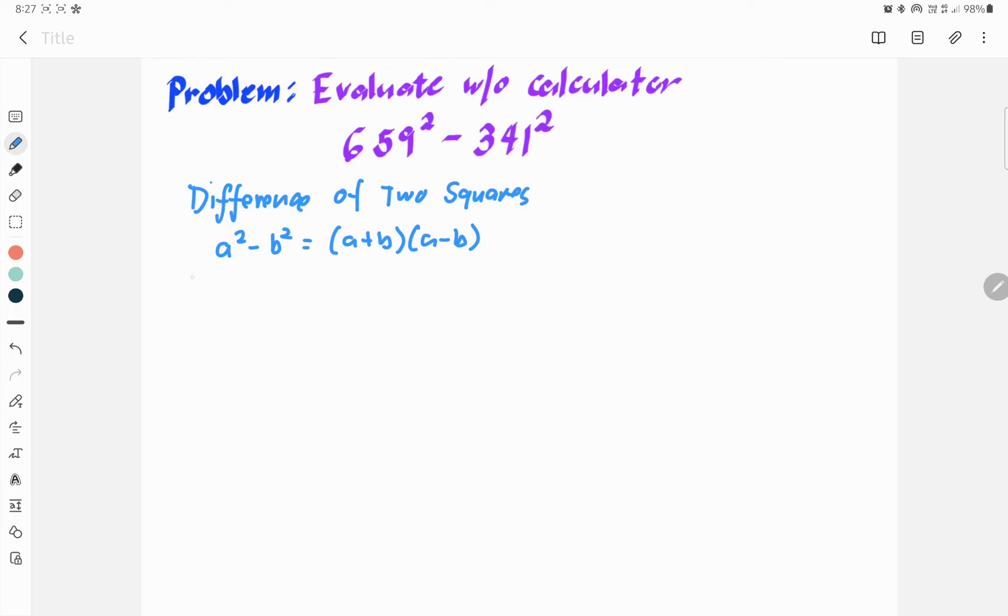In this manner, if we have 659 square minus 341 square, that would be the same with 659 plus 341, and then you multiply that to the difference, 659 minus 341.